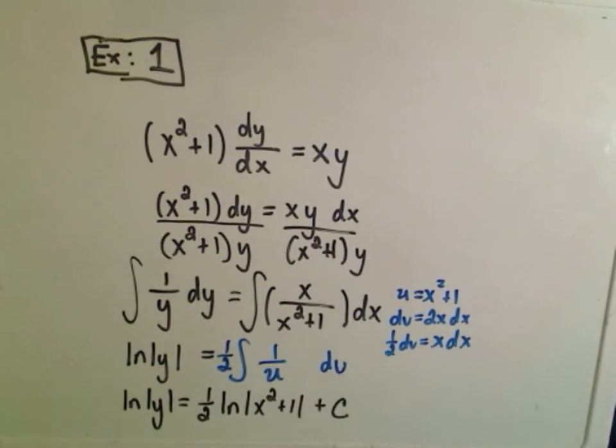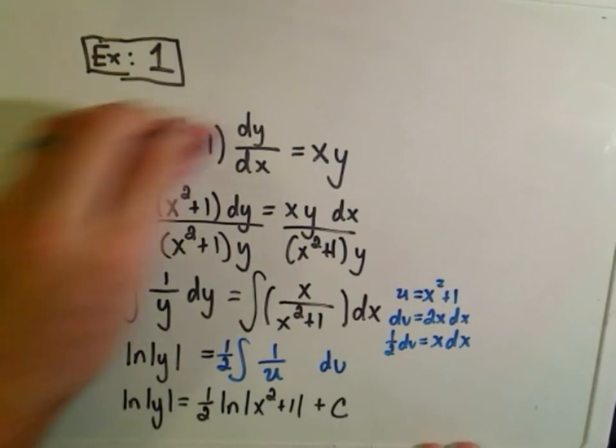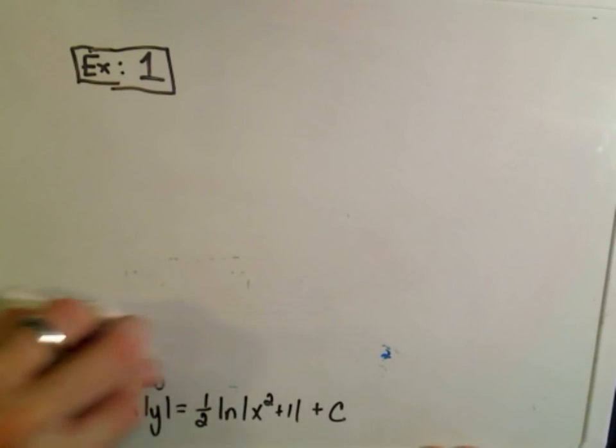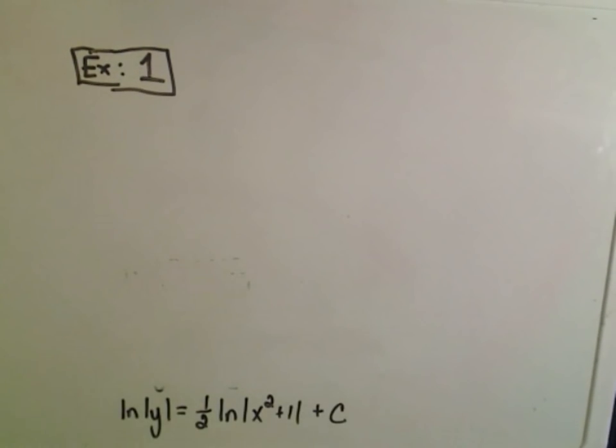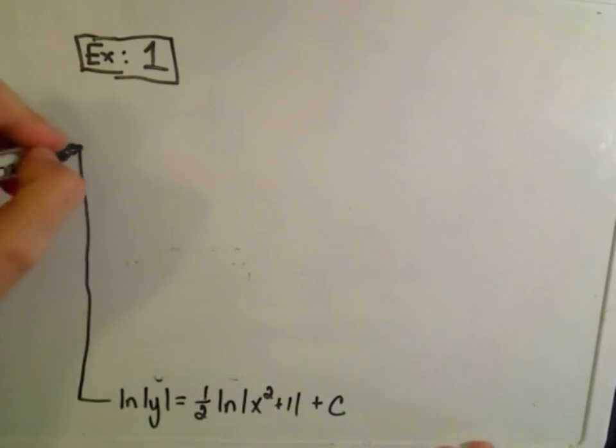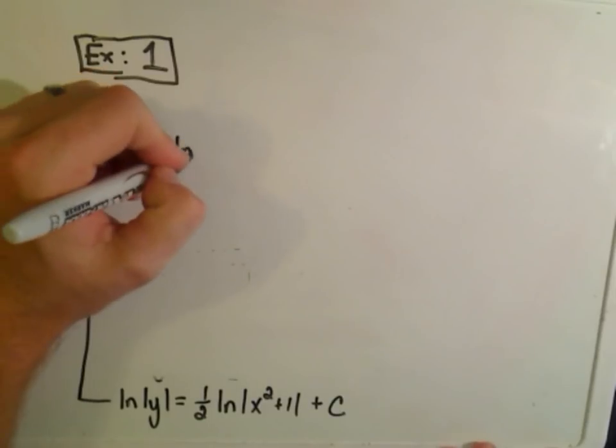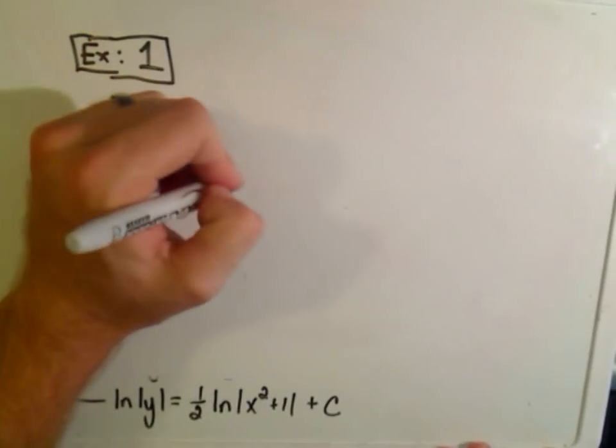Now, if possible, usually what you'll do on these is try to, again, get it in terms of y. Okay, so I'm going to get this in terms of y here real quick. And remember, to get something, to get rid of natural logarithms, you exponentiate both sides.